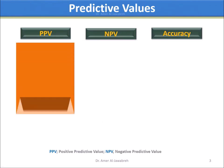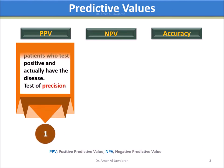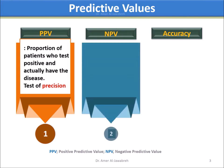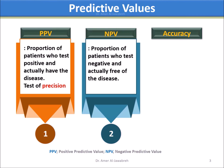Predictive Values: Positive Predictive Value (PPV) is the proportion of patients who test positive and actually have the disease — it is a test of precision. Negative Predictive Value (NPV) is the proportion of patients who test negative and are actually free of disease.